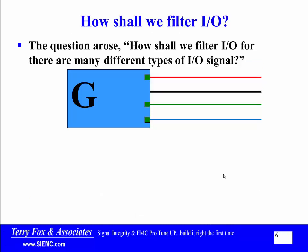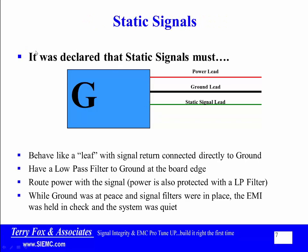For signals which could not be filtered, the ground was extended with the IO signal to assure that the return current would not go astray. How should we filter IO? For there are many different types of IO signal. It was declared that static signals must behave like a leaf — in other words, the end of this could not be connected to ground. They must have a low-pass filter to ground at the board edge. Route power with the signal, and power is also protected with a low-pass filter. Ground was at peace, signal filters were in place, and EMI was held in check.